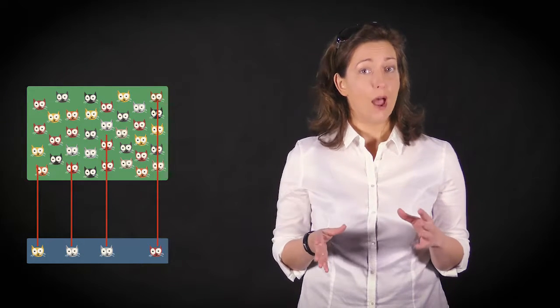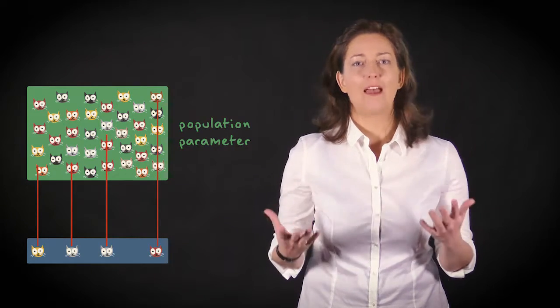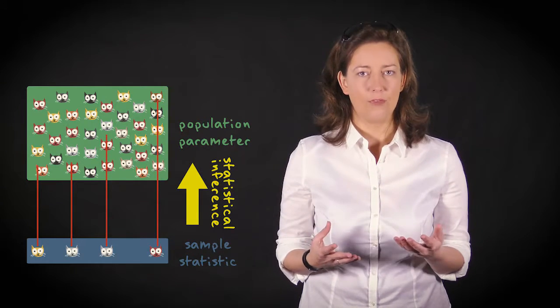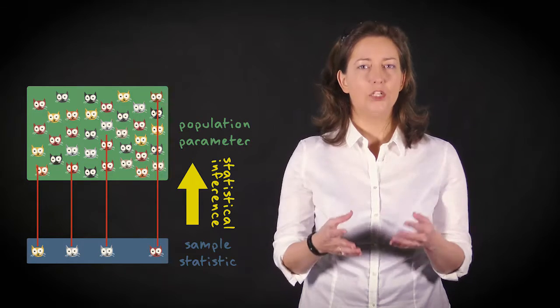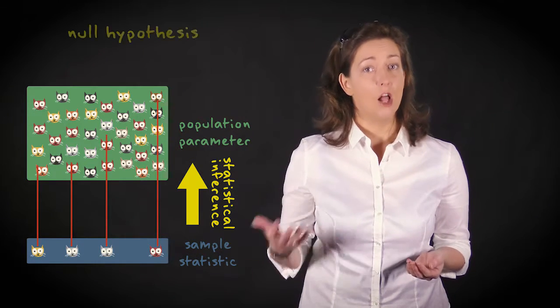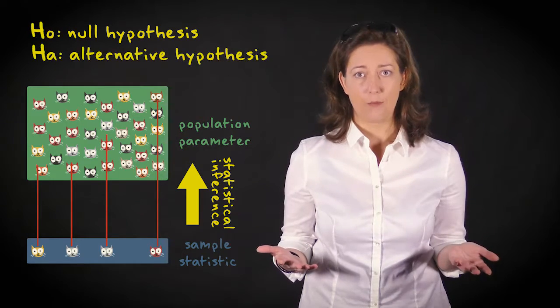We don't just describe some population parameter, some aspect of the population we're interested in. We use a sample statistic to decide something about that population parameter. To do this, we specify statistical hypotheses about the population, a null hypothesis and an alternative hypothesis.